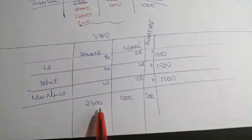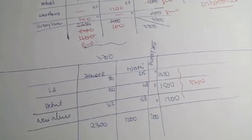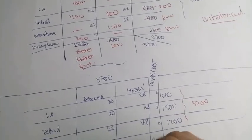However, in this one here, we have a total of 3,700, but here we have 3,500, so the system is unbalanced. To make it balanced, we predict there is a dummy destination of 200, so the summation would be 3,700 and 3,700.